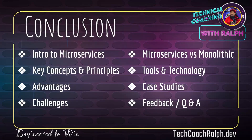That is everything for microservices. Let's run through what we covered: the intro to microservices, the key concepts and principles, the advantages of microservices, the challenges of dealing with microservices, and we compared microservices to a monolithic approach. We talked about the tools and technologies — many, many tools and technologies, very important to learn in anything you do in tech. And then we talked about case studies from Uber, Amazon, and Spotify.